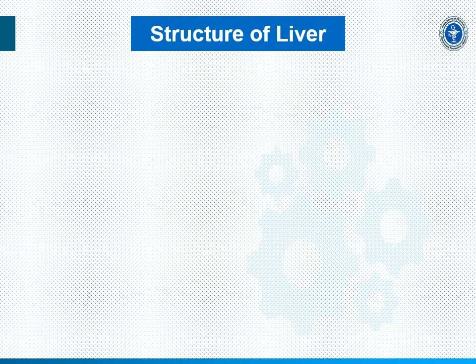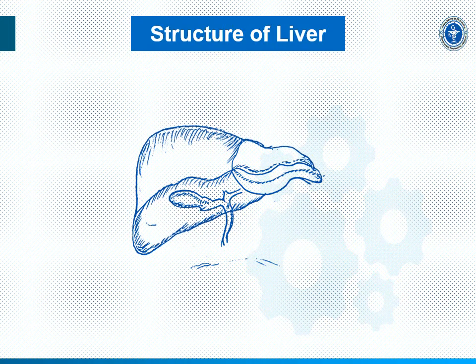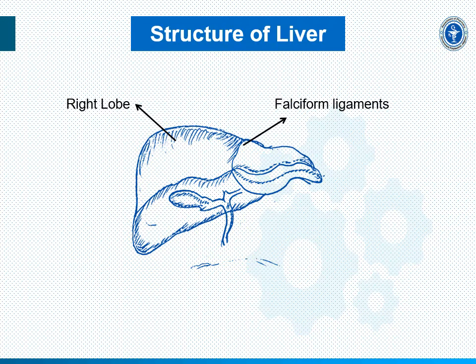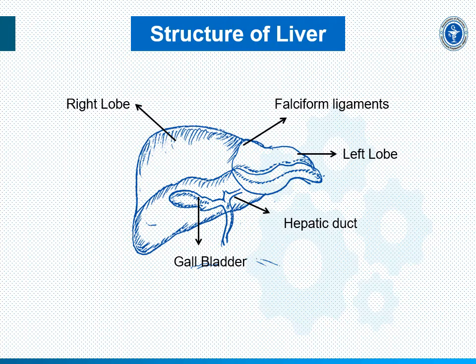Whenever we are talking about the gross anatomy, we must know the structure of the liver. Let us see the anterior view of the liver. Here you can see the diagram of the liver. The first part in the anterior view is the right lobe, next is the falciform ligament, then the left lobe. The arrow indicates the hepatic duct, and this one is the gall bladder.